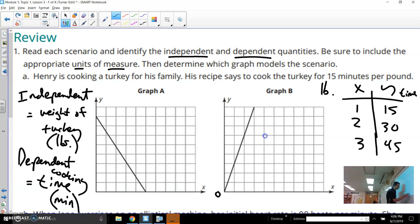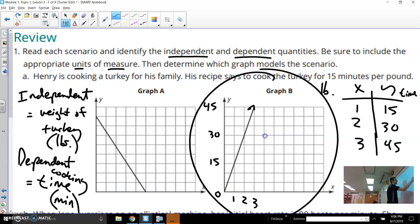If it's a zero pound turkey, well, you don't cook it. Zero pounds, zero minutes. However, one pound later, you're going to be up here at 15 minutes. Or at two pounds, you're going to be up here at 30 minutes. Maybe that last one, that three pounds, that goes up here and hits that 45 minutes. And that just continues on and on and on. So that's why I really like graph B to model that scenario.